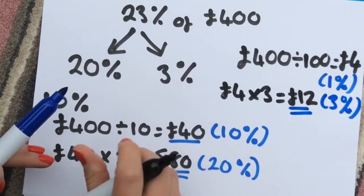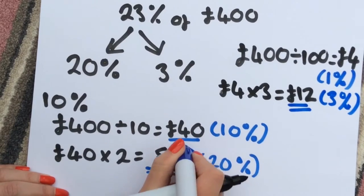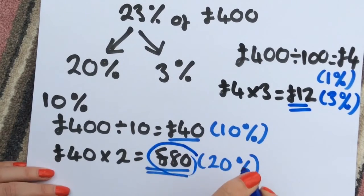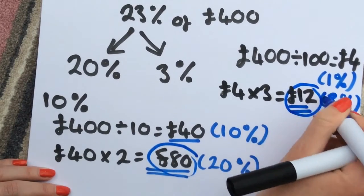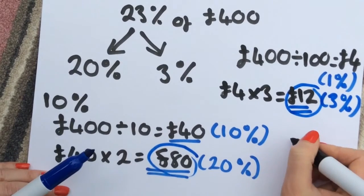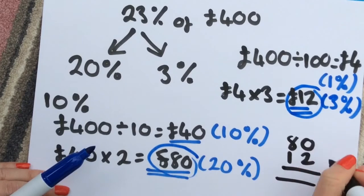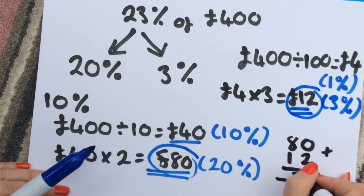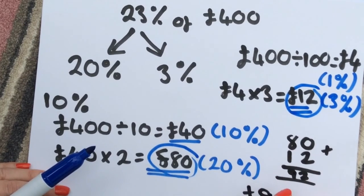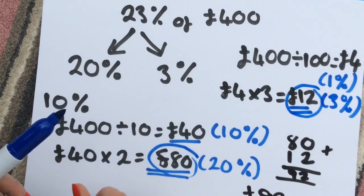So for the final answer, we then take our £80, which is worth 20%, and our £12, which is worth 3%. Add that up together. And your final answer is £92.